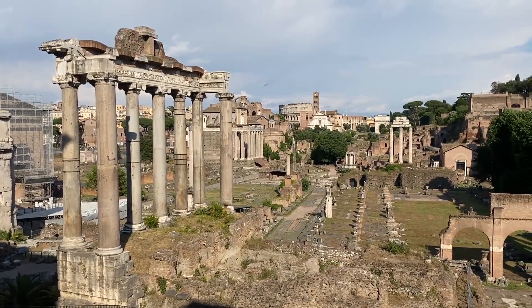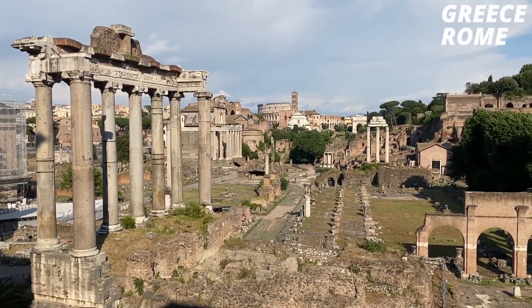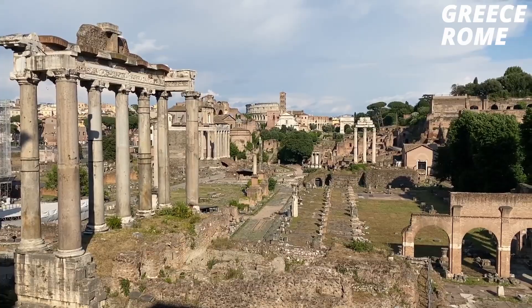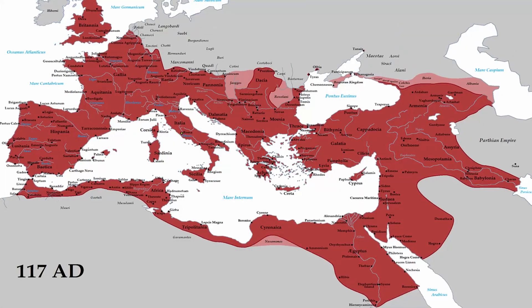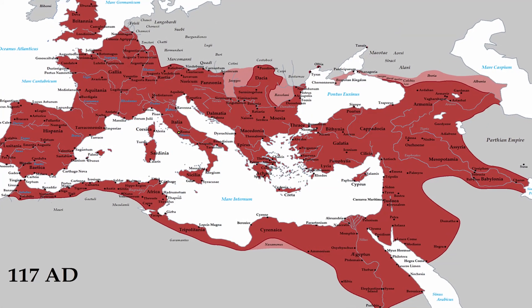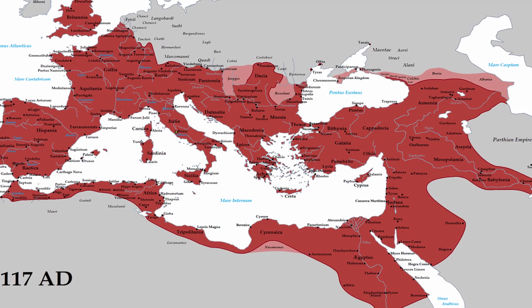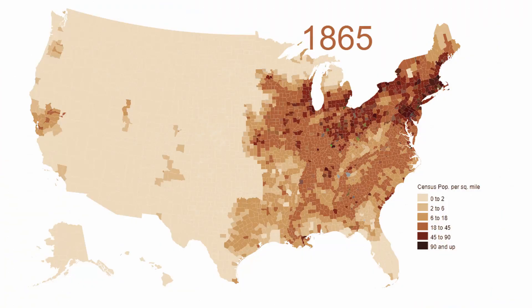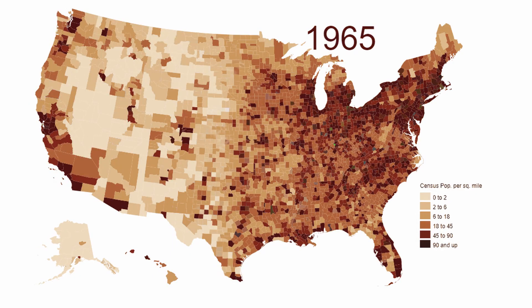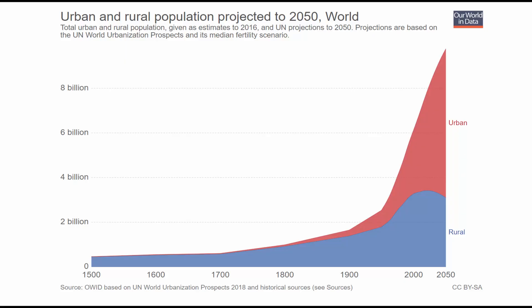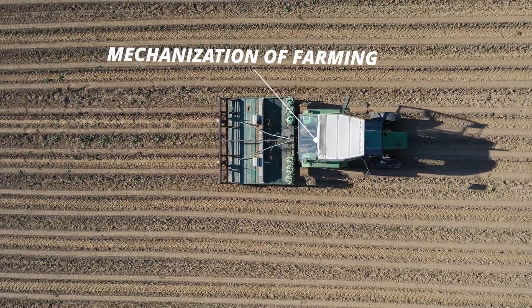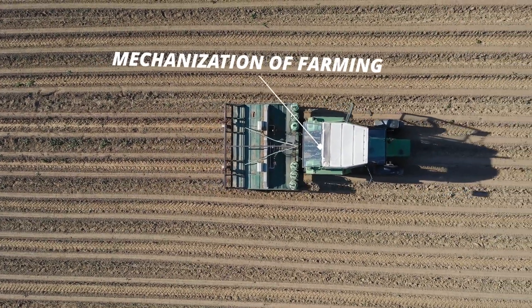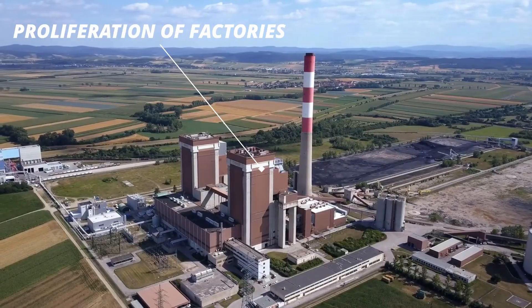Then you have the secondary hearths of urbanization, which include Greece and Rome. At the peak of the Holy Roman Empire, the ideas of urbanization spread to many modern-day European countries. Those ideas eventually spread to the New World, particularly the United States, starting at the east coast and then spreading to the Pacific Ocean with the idea of Manifest Destiny. Initially most people were farmers, but with the second agricultural revolution and the mechanization of farming, many people found themselves out of work and moved into urban areas to work in factories.